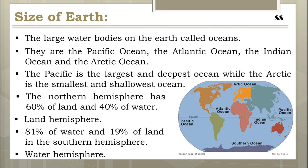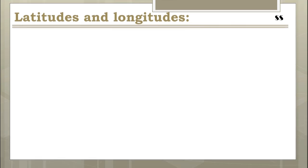The Earth is spherical in shape, therefore it is difficult to locate places, directions, and calculate distances between places. In order to understand the relation between different places and their exact location, we need to understand their position, distance from any fixed point, and exact direction. To know position, distance, and direction — east and west or north and south — a network of lines are drawn on the globe, known as lines of latitudes and longitudes. The horizontal lines are latitudes and the vertical lines are longitudes. These lines intersect each other at right angles and create a network called a grid or graticule.